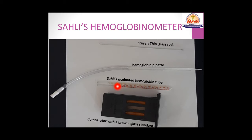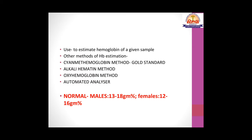When taking the reading, we put the glass rod at the upper end of the tube but do not pull it out entirely — we keep it at the upper part to avoid a falsely low reading. The reading is taken at the upper meniscus. The gold standard method for hemoglobin estimation is the cyanmethemoglobin method, which uses a reagent composed of potassium ferricyanide and potassium cyanide.